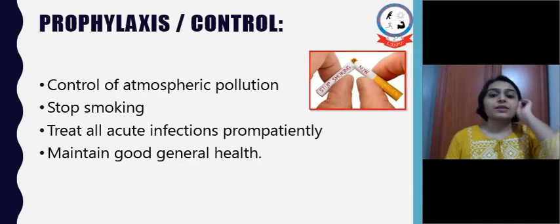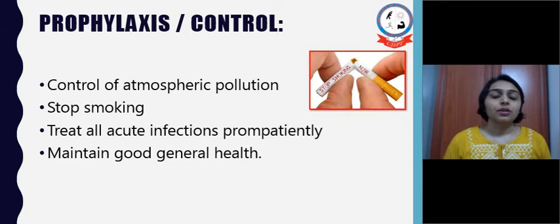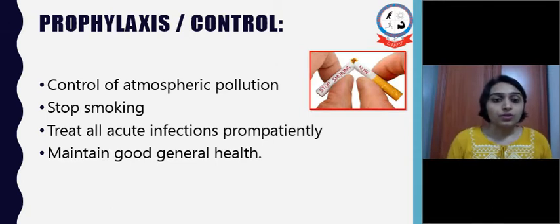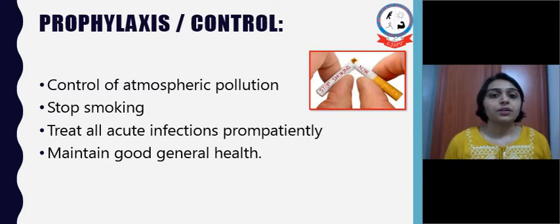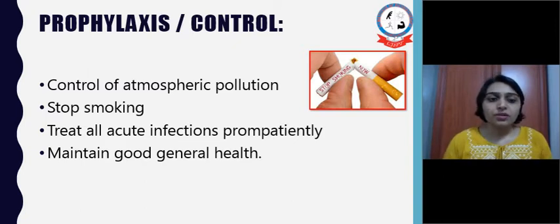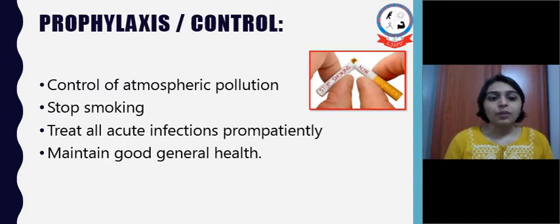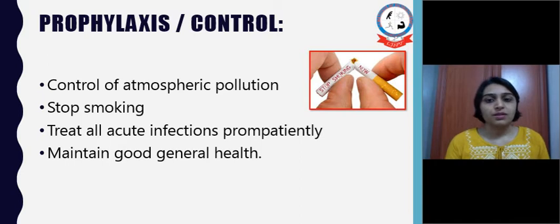Next is prophylaxis or control. Control of atmospheric pollution and stopping smoking right now is very important to control the disease. Treat all acute infections promptly, and maintaining good general health should be advised.